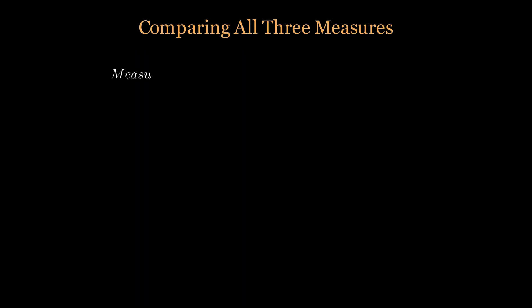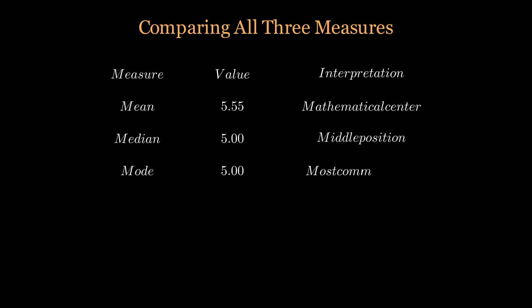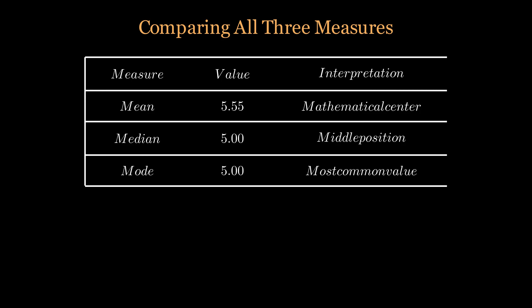Let's compare our three measures for the same dataset. The mean is 5.55, representing the mathematical center. The median is 5, showing the middle position. The mode is also 5, indicating the most common score. Notice how the outlier of 12 only affected the mean, while the median and mode remained stable. This demonstrates why understanding all three measures gives us a complete picture of our data's center.